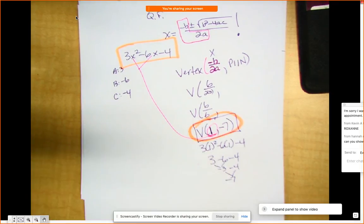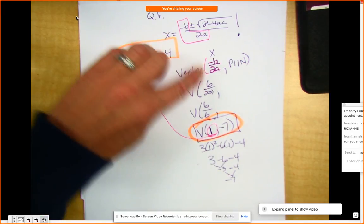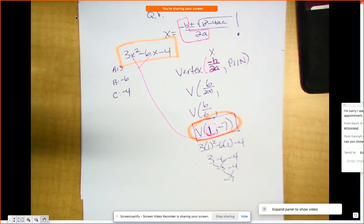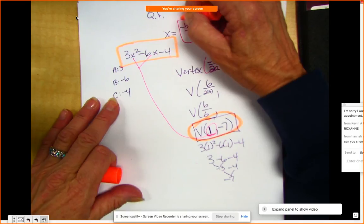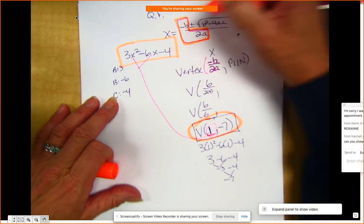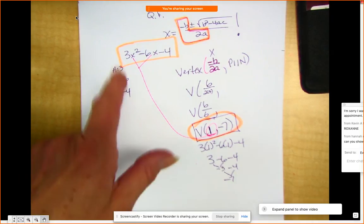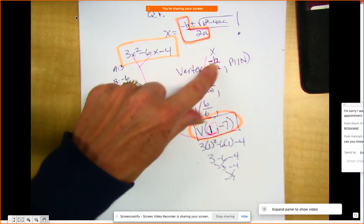It's that simple. Opposite of b over 2a, the first part of your quadratic formula, is your vertex. And then you plug whatever value that works out to be, you plug it into the problem.